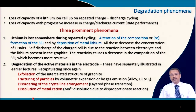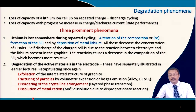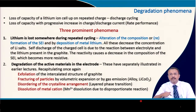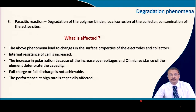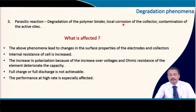There is a disproportionation reaction: if Mn³⁺ is affluent it produces Mn⁴⁺ and Mn²⁺ ions, and Mn²⁺ dissolves into the electrolyte, degrading the active material. Apart from that there are parasitic reactions: degradation of the polymer binder can disintegrate the whole composite electrode material. Local corrosion of current collectors is possible, particularly if trace amounts of water are present — HF will be generated and this hydrofluoric acid will corrode the current collector. Contamination of the active sites where lithium goes and sits is also possible.